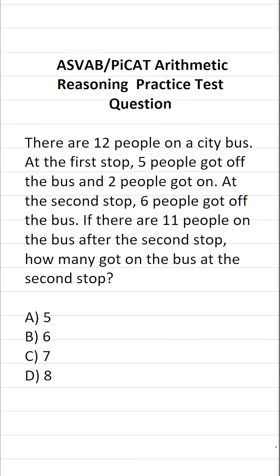This arithmetic reasoning practice test question for the ASVAB and PICAT says there are 12 people on a city bus. At the first stop, five people got off the bus and two people got on.